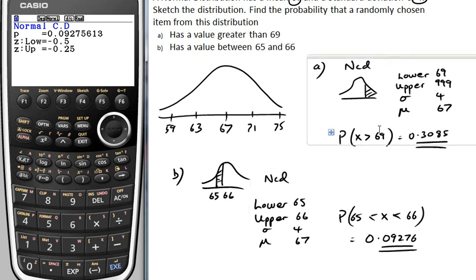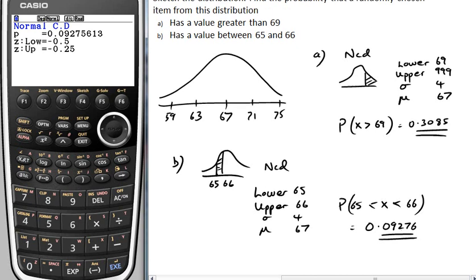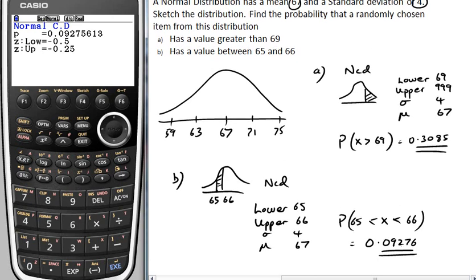So that's how you would use the information on the calculator to calculate values using NCD.